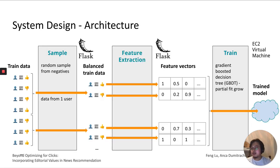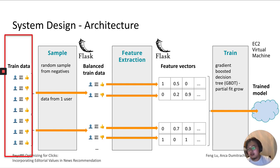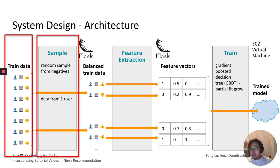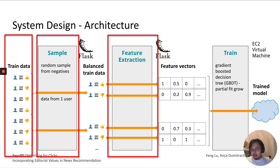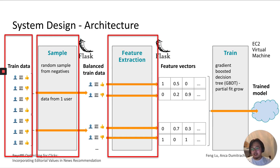In the training process, we use user clicks as positive samples and shown but non-clicked items as negative samples. Since we do not want overfitting on the negative samples, we perform a sampling step to balance out the data. Each user-article pair is then used for feature engineering, and the output feature vectors are used for training our model. We use a GBDT architecture, trained using user interaction data from the previous seven days. The optimal number of seven days for training was determined in offline experiments.